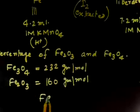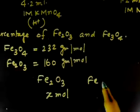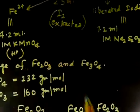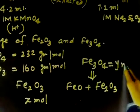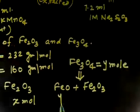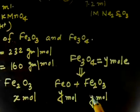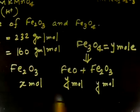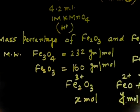This is a slightly tricky problem. Let us say we have x moles of Fe₂O₃ and y moles of Fe₃O₄. Fe₃O₄ is basically an equimolar mixture of FeO plus Fe₂O₃. So if I have y moles of Fe₃O₄, this means I will have y moles of FeO and y moles of Fe₂O₃. The oxidation state of iron in FeO is 2+, in Fe₂O₃ it is 3+.